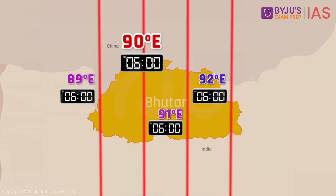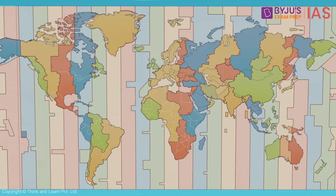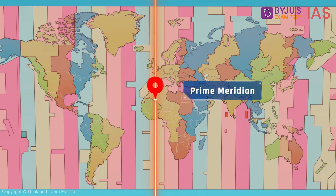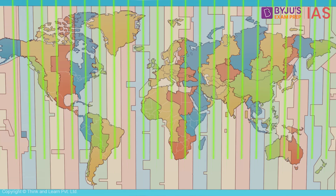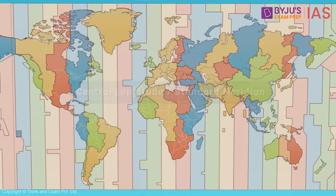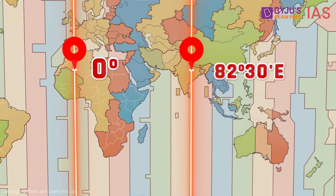For the purpose of ease, the world has been divided into several time zones whose times are coordinated with respect to the prime meridian. Specifically, there are 24 time zones in total. Each time zone has a specific longitude chosen for standardizing the time, called the central longitude or the standard meridian of that time zone.